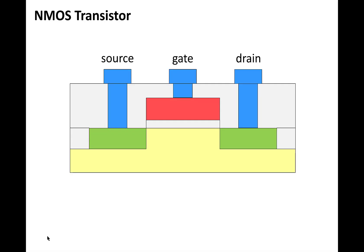Note that the region surrounding the gate forms a capacitor, where the gate itself is the top plate of the capacitor, the glass is the insulator between the plates, and the silicon substrate is the bottom plate.